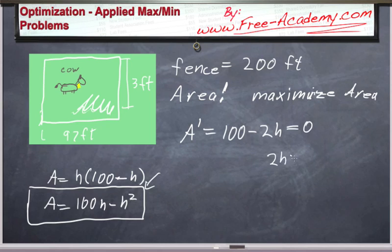You can find what value of h is going to give you the maximum height. You solve this, you get 2h equals 100, and h equals 50. Which means that your base is equal to 50. You can take this value, plug it back into your equation here, and find out what your maximum area is.